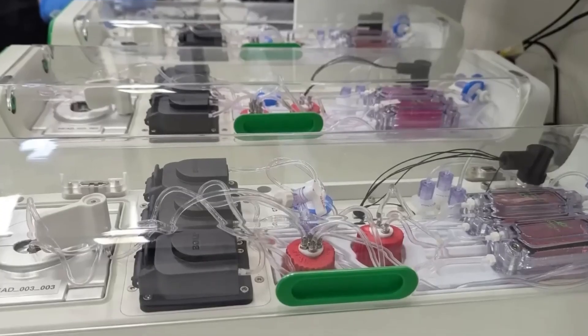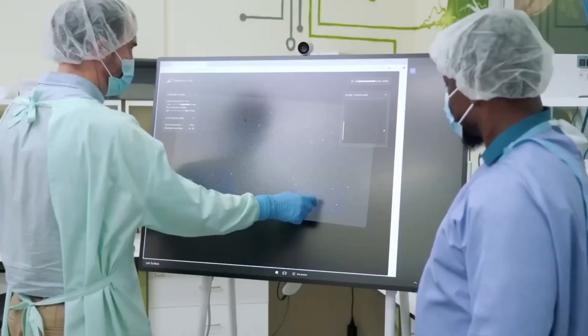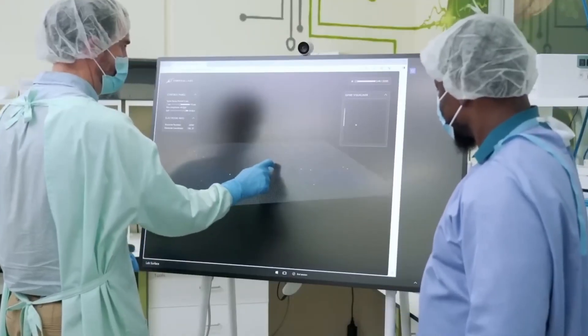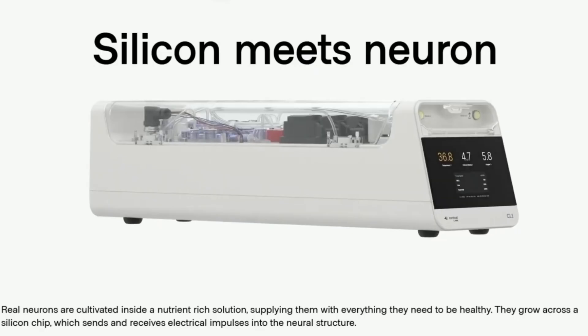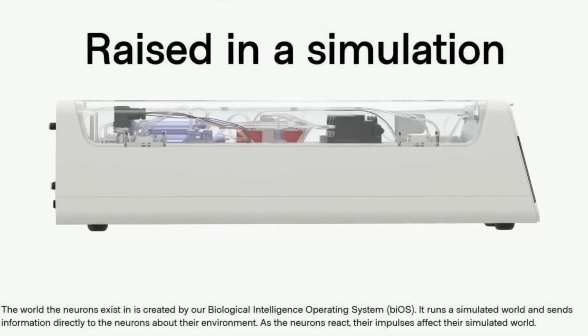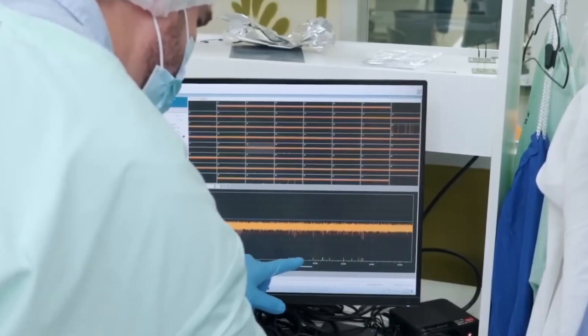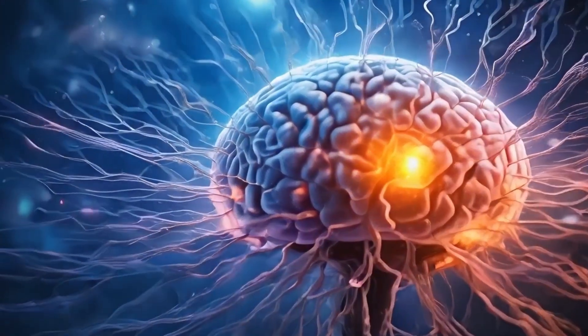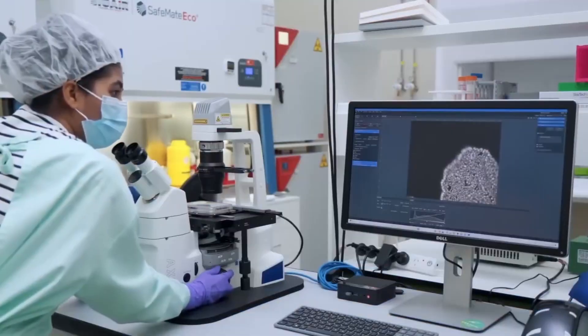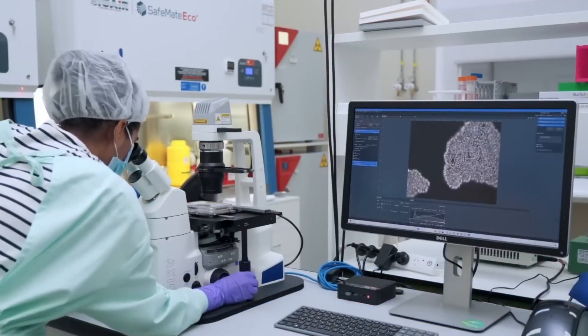But the possibilities don't stop there. The CL1 could drastically improve how we design robots and other forms of artificial intelligence. By incorporating real brain cells into the system, these robots could learn and adapt in ways that traditional machines cannot. It's like giving them a human-like ability to process information and react in real time to their surroundings.